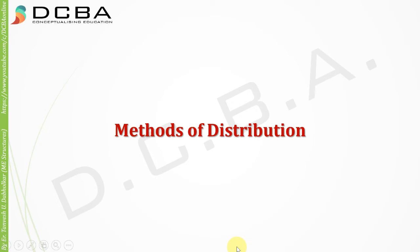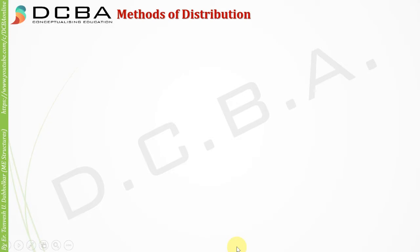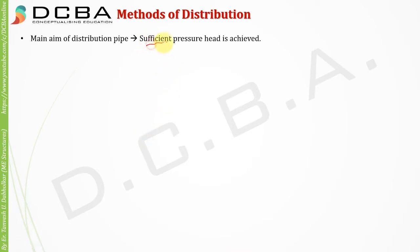In the last video lecture we learned about different layouts of distribution networks. In this lecture we will be learning about the methods of distribution. One of the requirements of a good distribution system was that it should develop sufficient pressure head wherever it is supplying water. To ensure this, we have different types of methods of distribution.